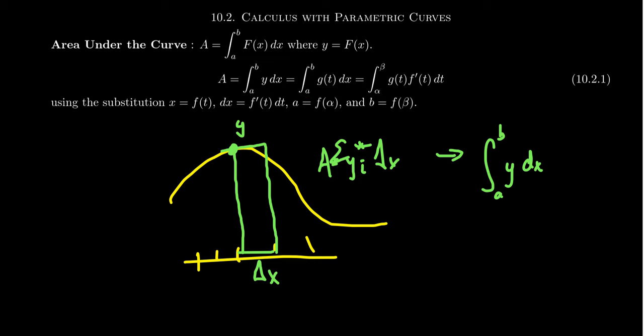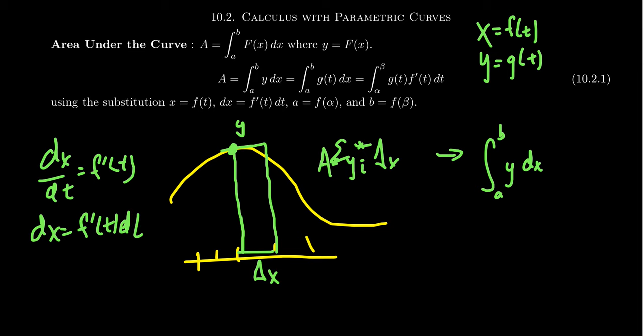Now, if our function is given by the parameterization x equals f of t and y equals g of t, then we can substitute y with simply just a g of t, like so. That's a simple switch. How do we deal with the x here? Well, since x is f of t, we could take, by the chain rule, we could take the derivative of x with respect to t. This would give us that dx over dt equals f prime of t. And then clear the denominators, we get dx equals f prime of t dt, like so. We make this substitution in, and that then becomes this boy right here.